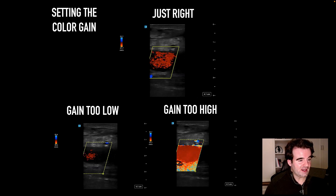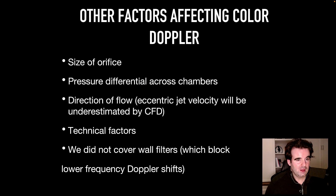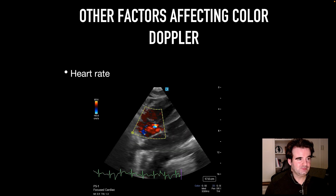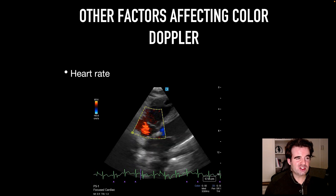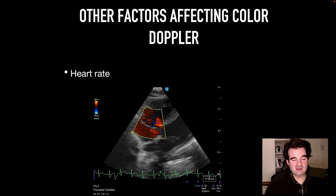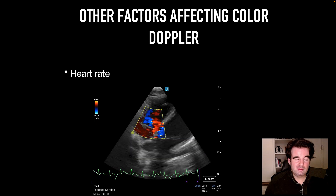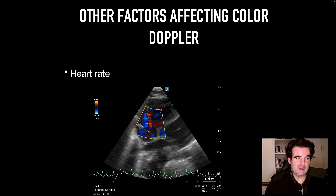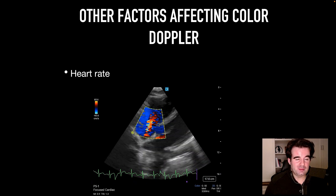There are a host of other factors that affect Color Doppler, from the size of the orifice to the pressure differential across chambers. This is about how that pressure difference is converted to a velocity — if the velocity is less likely to alias, then that signal is less. This is very much the case with eccentric jets, which register less velocity because the angle is non-parallel to the beam. We do not cover wall filters here, which can block lower frequency Doppler shifts. Also keep in mind that when the heart rate is very high — in this case 120 — it can be extremely hard to pick out regurgitant and stenotic lesions, limiting our ability to visualize aliasing. It's more optimal to have the heart rate near normal when Doppler is applied to examine the valves.